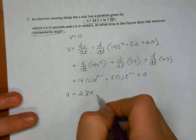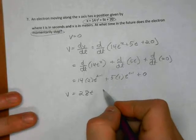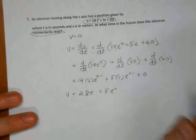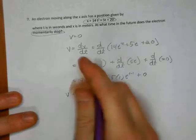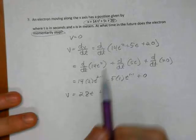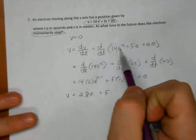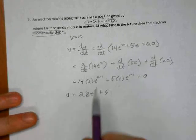So we are given the position function of an electron that gives us the position x at any point in time t. So plug in a time, you get its position. And it asks, at what time in the future does the electron momentarily stop? When does it stop? When its velocity equals zero.